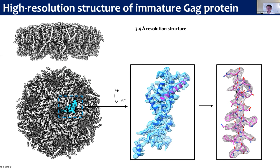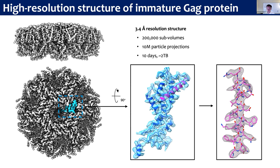The bottom line is that using this technology we can resolve protein structure at quite high resolution, but there is a caveat. To get this particular structure, we actually need to combine 200,000 sub-volumes of GAG protein, which is equivalent to about 10 million particle projections because this is tomography. Just to give you a sense of how expensive data acquisition is, it can take on the order of a week to 10 days. You end up with about two terabytes of data that you need to put through image processing analysis.